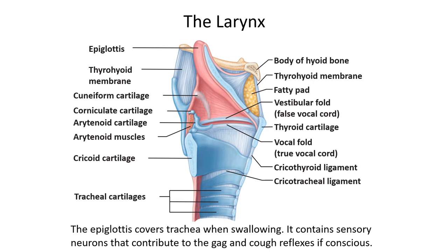Note that the gag and cough reflexes will only occur if the person is conscious — something to be wary of. If someone is unconscious and there is a chance they might vomit, they won't necessarily elicit that response and cough out the vomit. The cartilages of the larynx and trachea ensure these structures maintain an open airway. This is quite different from the esophagus, which is generally collapsed and sometimes referred to as a potential tube — it only opens as food travels down it. But the larynx and trachea need to be able to conduct air at all times and must be rigidly held open.